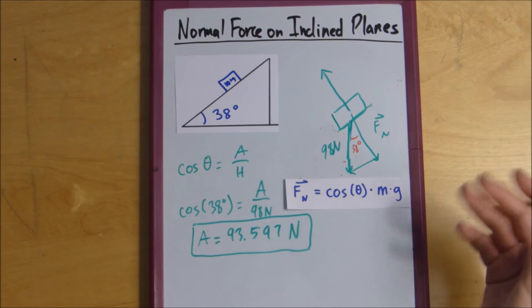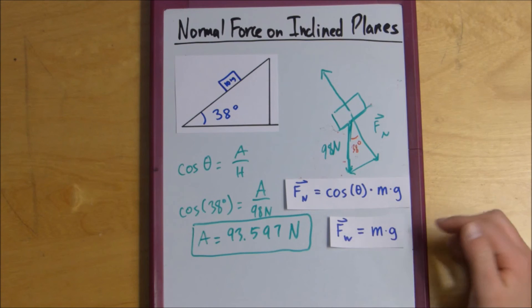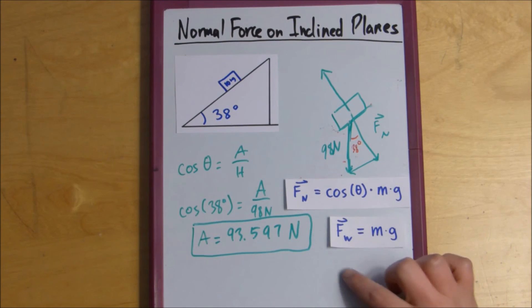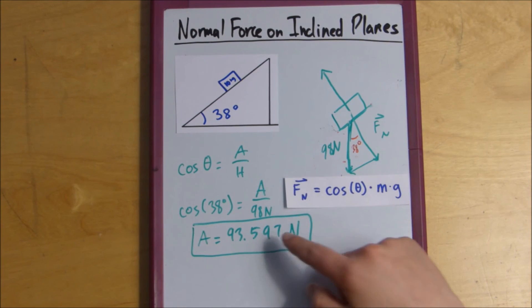And what this essentially is saying is exactly what we did. We found the cosine of theta. We multiply it by the hypotenuse, which was our weight force, which is essentially what it's saying. Cosine of theta times weight force. Because they're equal. And that's what we did. We just multiplied across and then we got our normal force.